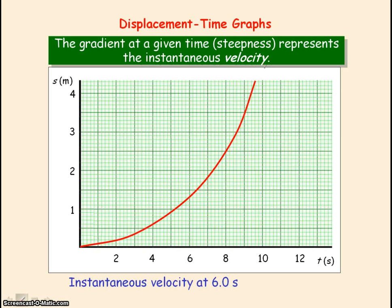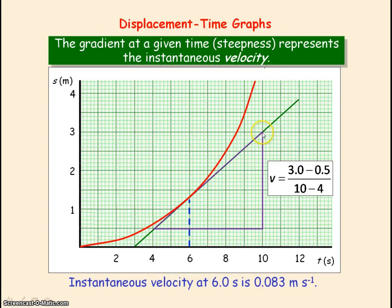For this graph, if we needed to obtain the instantaneous velocity at 6 seconds, we will need to obtain the gradient of the curve at that time. So we will need to take a tangent and then work out the gradient of the tangent. The gradient is the change in y — so y2 minus y1 — divided by the change in x, so x2 minus x1. Our change in y is from 3 to 0.5 and our change in x is 10 minus 4, and that gives an instantaneous velocity of 0.083 metres per second.